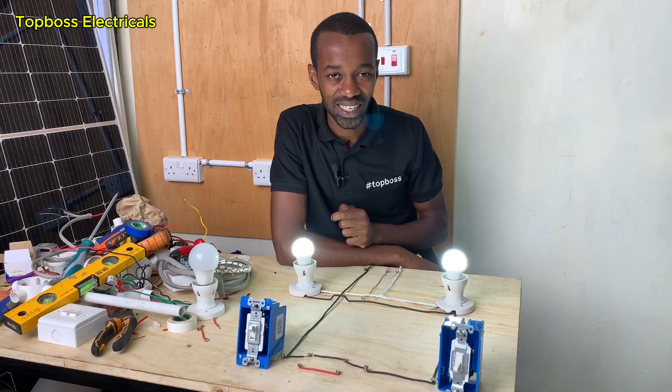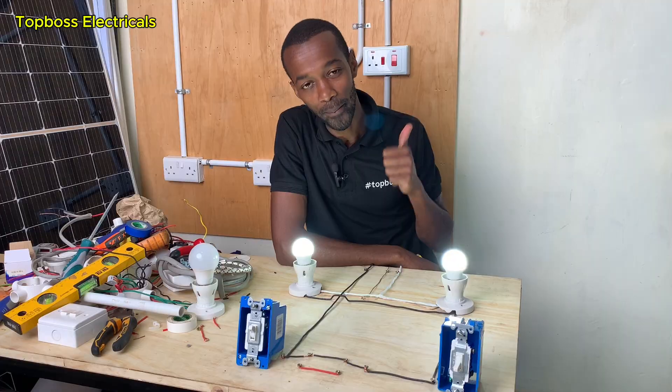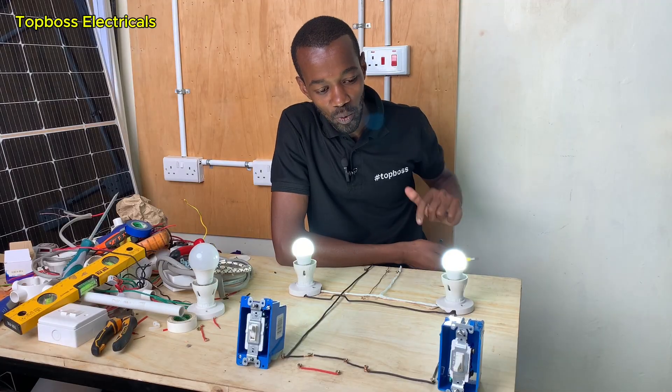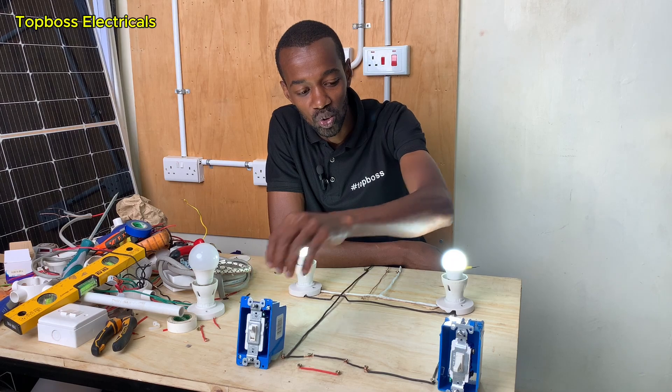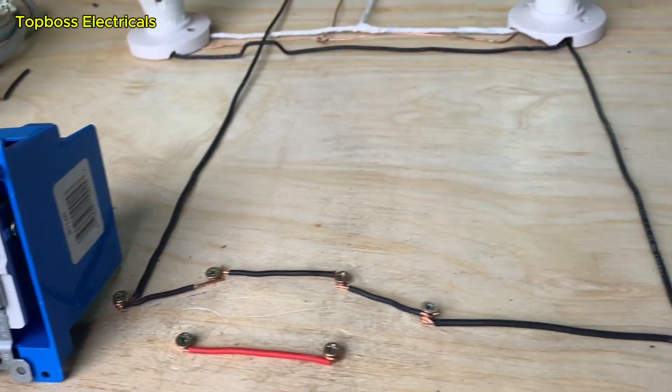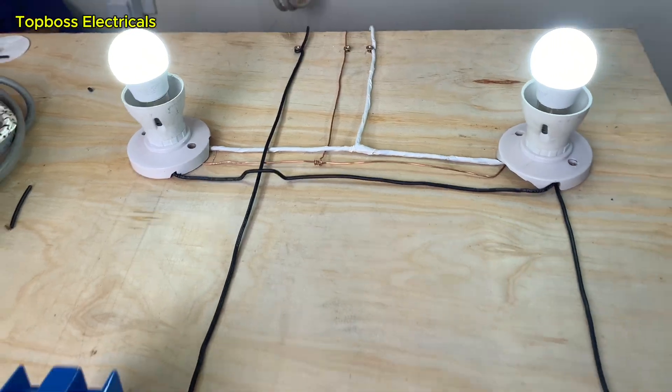You have to switch off that light without necessarily going back to that door where you came through. Now we will have these two switches, referred to as three-way switches, and we also have these lighting points. You can have one, two, or even several.